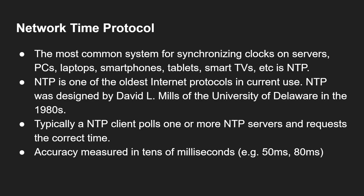NTP is one of the oldest internet protocols currently in use. It was designed by David Mills of the University of Delaware in the 1980s. Typically, an NTP client polls one or more NTP servers and requests the current time. Accuracy is normally measured in tens of milliseconds — so the clock on your PC is accurate within around 50 to 80 milliseconds. If you don't have a grasp of milliseconds, microseconds, and nanoseconds, there's a whole video about this that I recommend you check out.